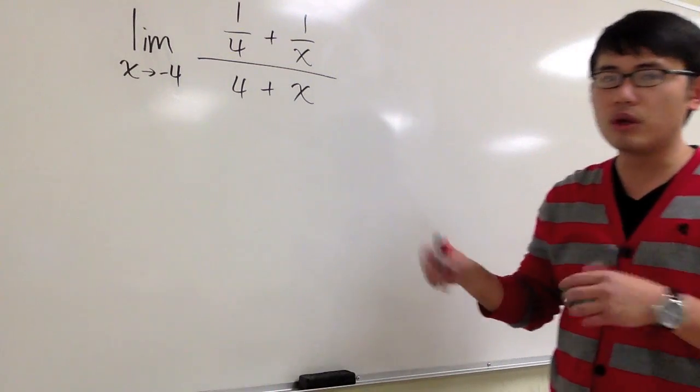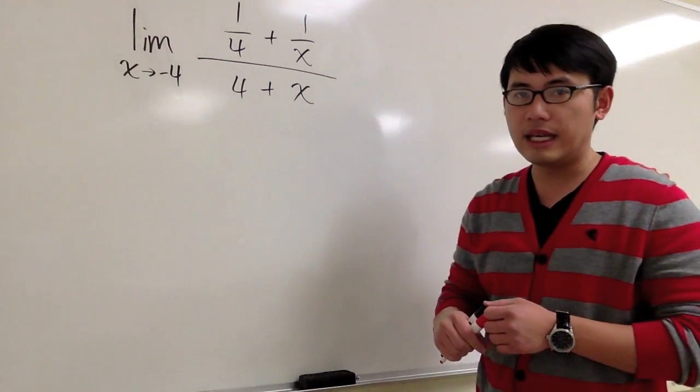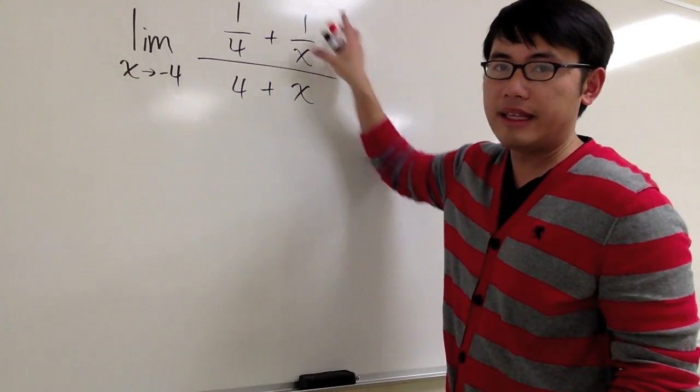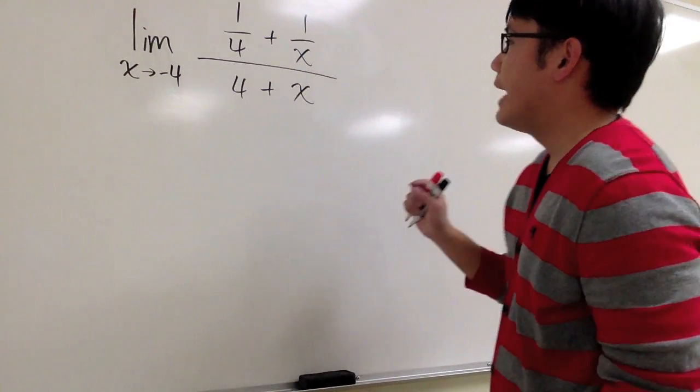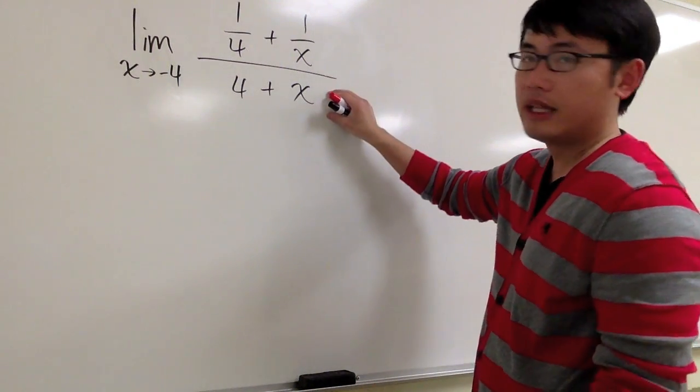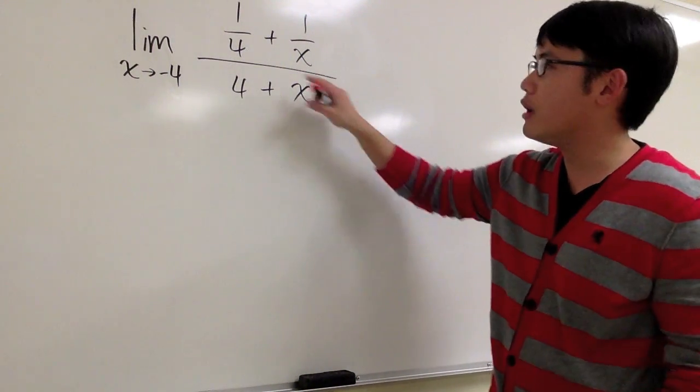So it's 0 over 0, we have to do more work for this. This right here is a complex fraction because we have two small fractions on the top and then a big fraction. And to take care of this situation, we are going to multiply the top and bottom by the lowest common denominator of the small fractions.